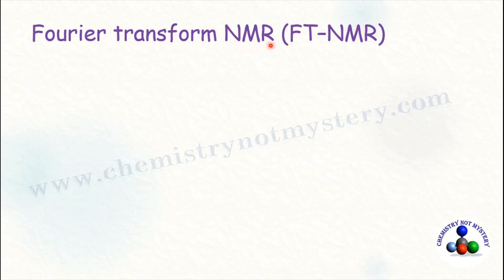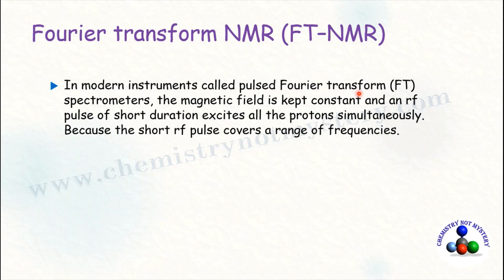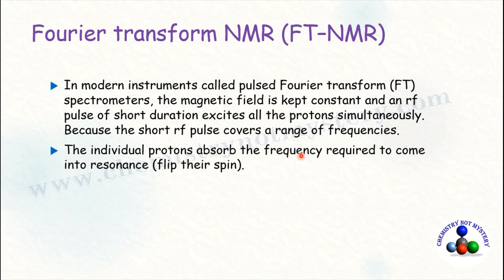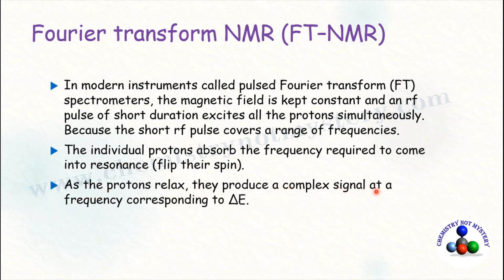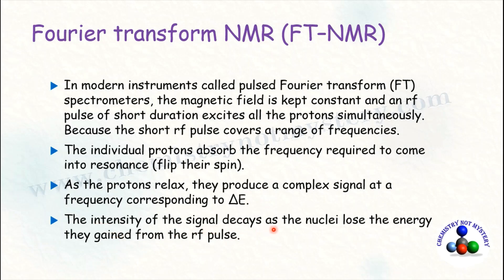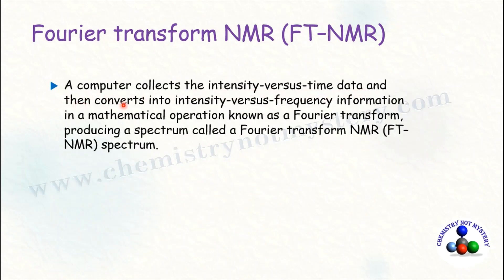In modern instruments called pulse Fourier transform spectrometers, the magnetic field is kept constant. A short radio frequency pulse excites all protons simultaneously because it covers a range of frequencies. Each proton absorbs the frequency required to flip its spin. As the protons relax, they produce complex signals whose intensity decays over time. A computer collects the intensity-versus-time data and converts it into intensity-versus-frequency information through a mathematical operation known as Fourier transform, producing the FTNMR spectrum.